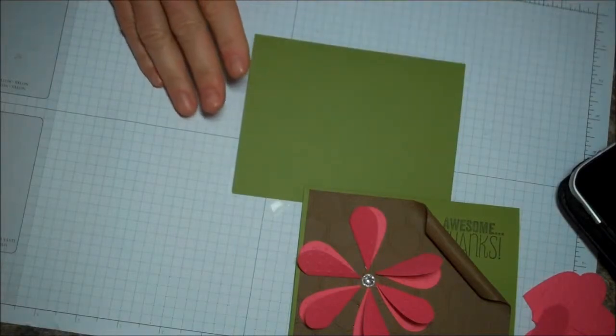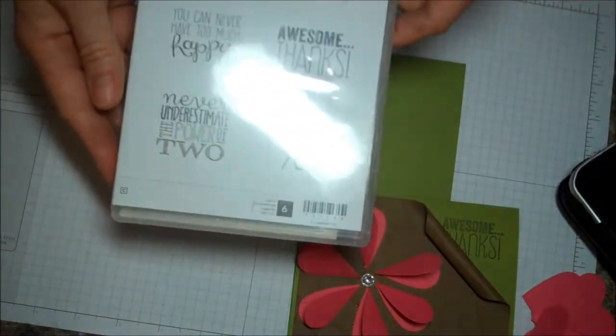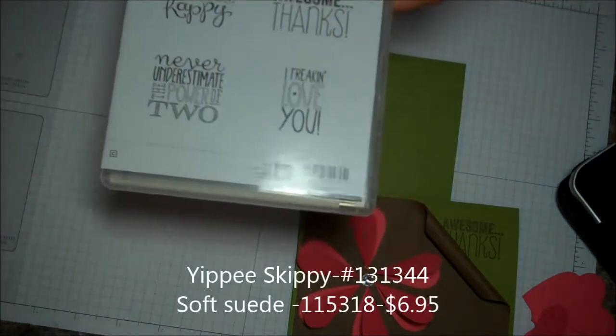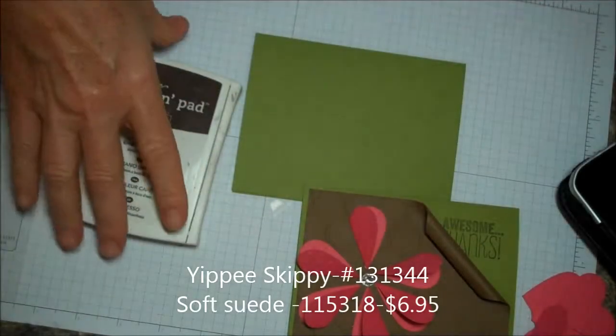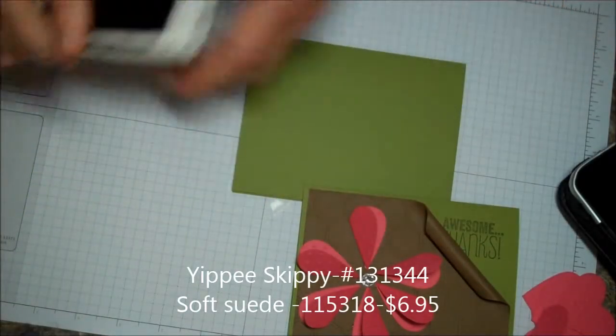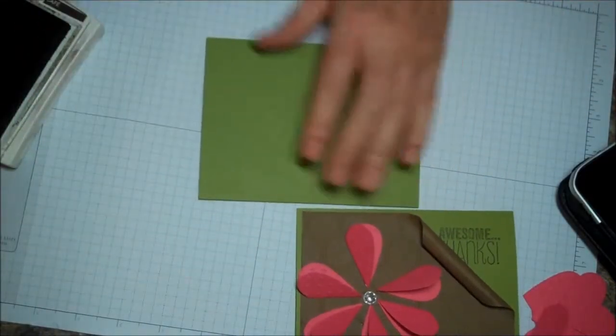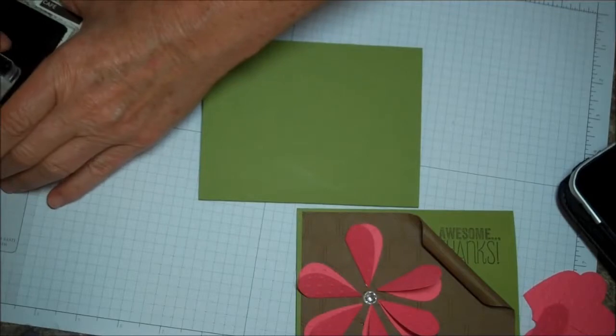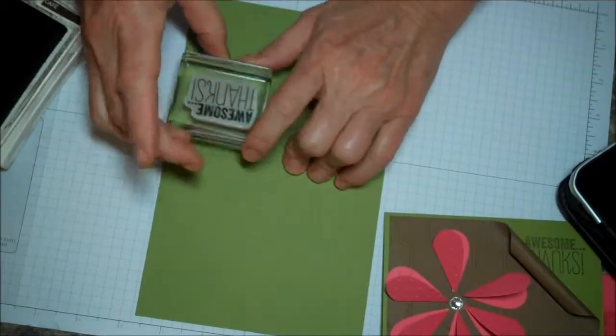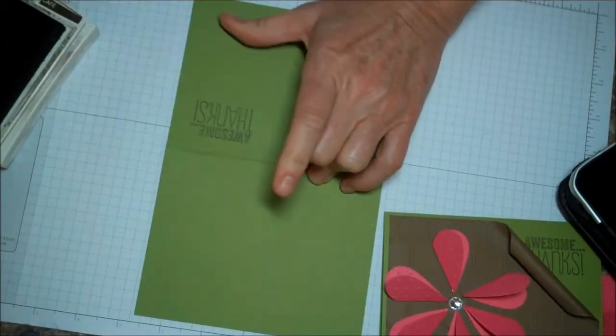Then I'm going to take this cute stamp set called Yippity-Skippity, and I'm using Early Espresso, and I am going to stamp the Awesome Thanks right up there in the corner.